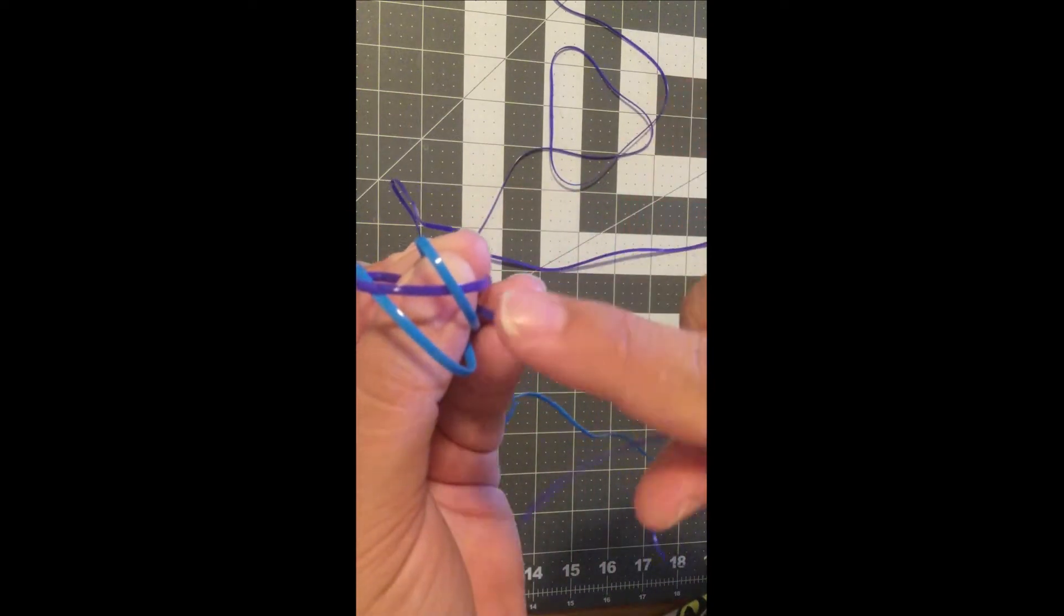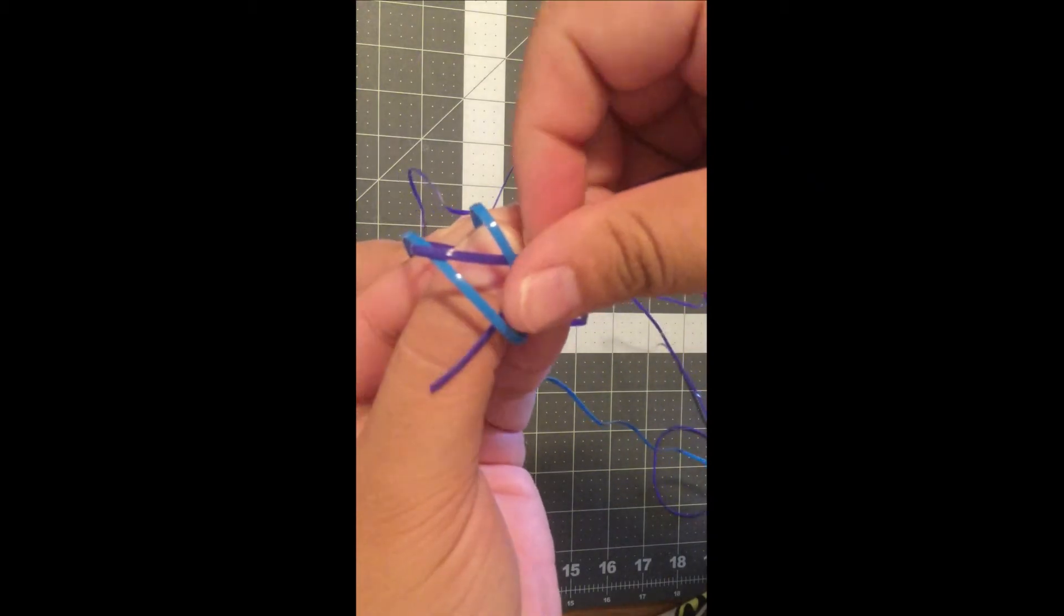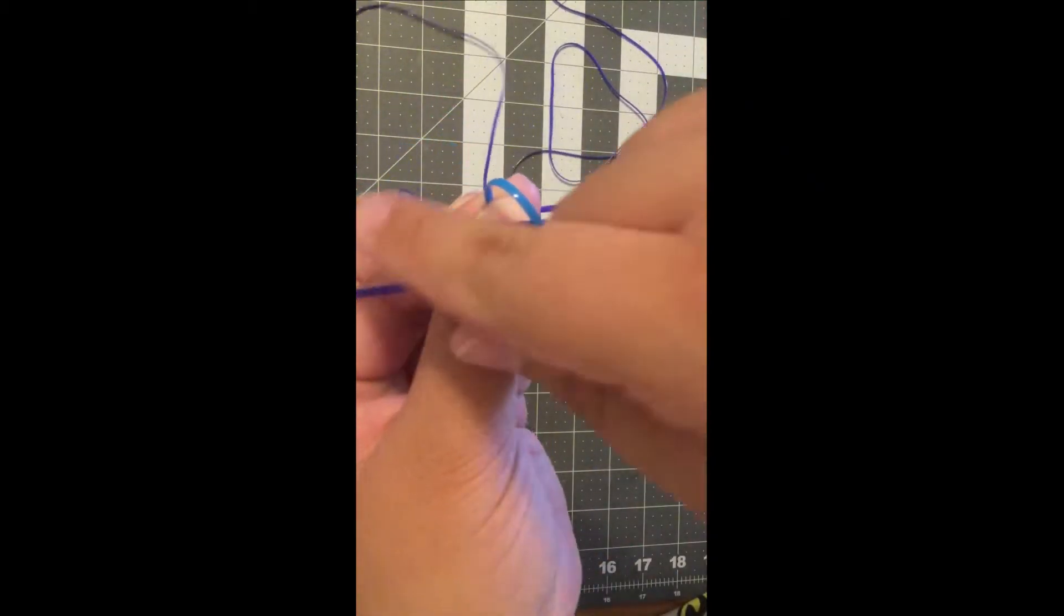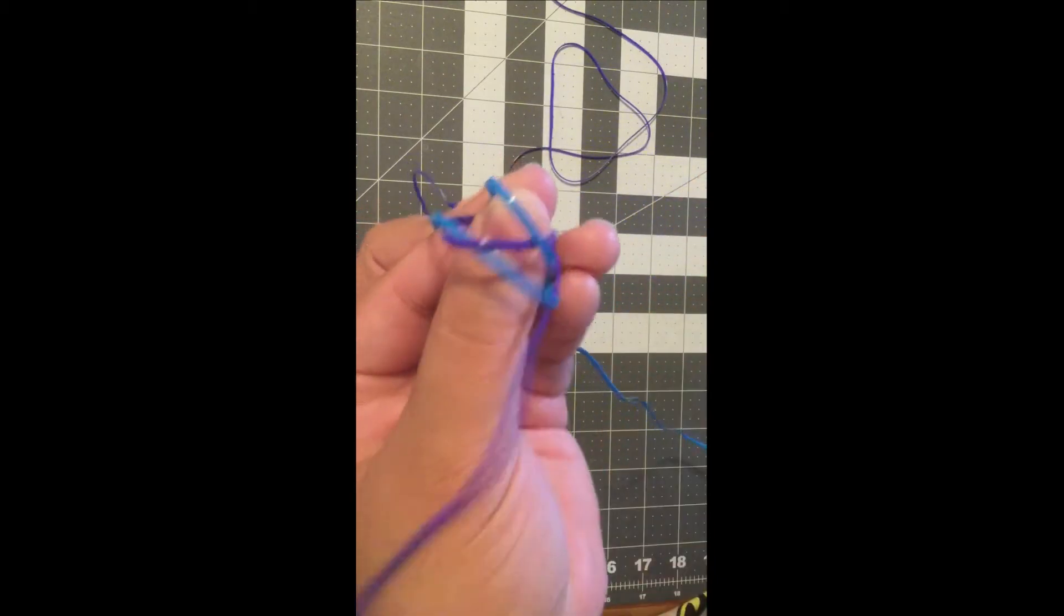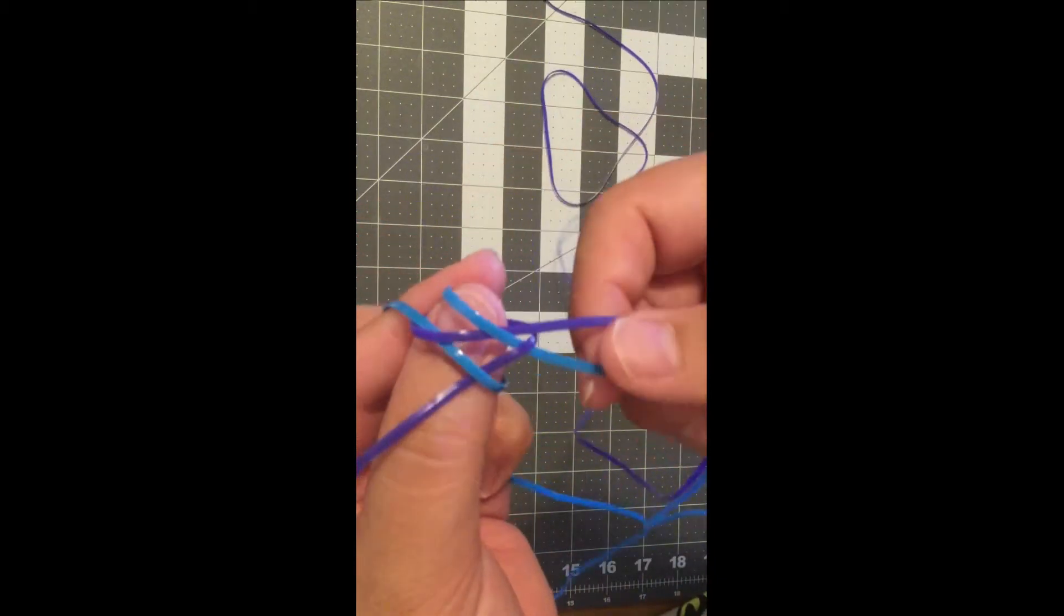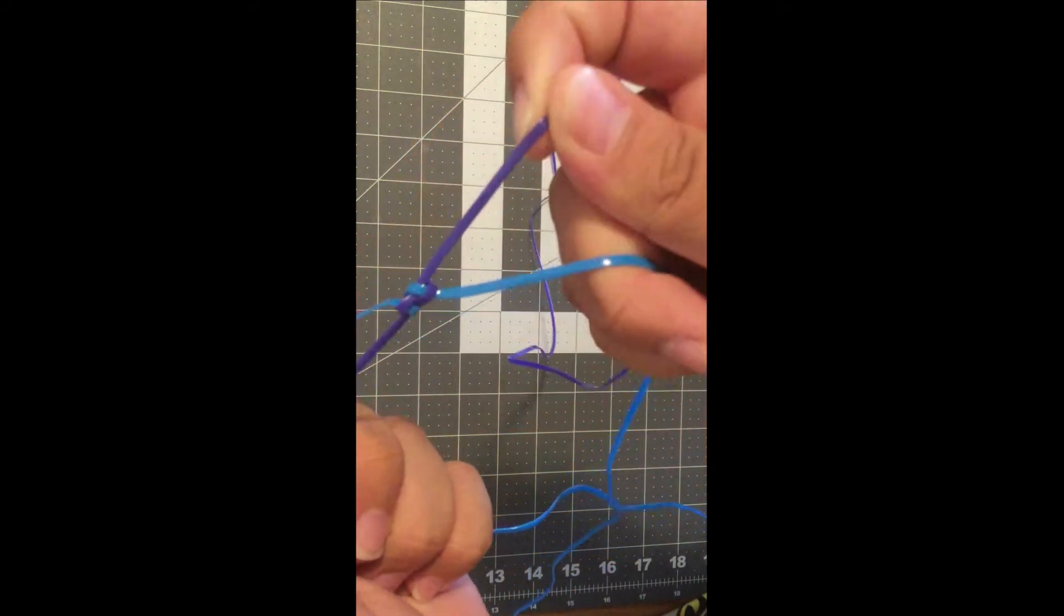Do the same with the second cord but on the opposite direction. Now you can remove your thumb from under the cords and pull them together. It should create a box.